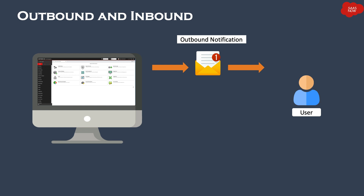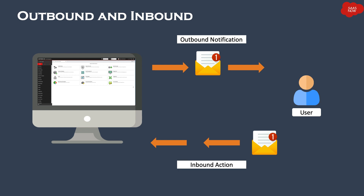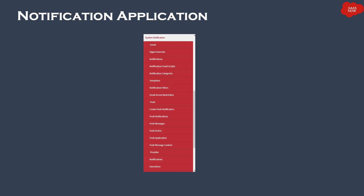For example, when an incident is assigned to a group, all group members will get an email notification about the assignment of the ticket. Users can also respond to the email received or create a new email and send it to ServiceNow, which can perform some action on the records of a table — this is called an inbound action. As an example, users can email your instance email address and ServiceNow can process that email, create an incident record, and populate the fields as per the information mentioned in the email.